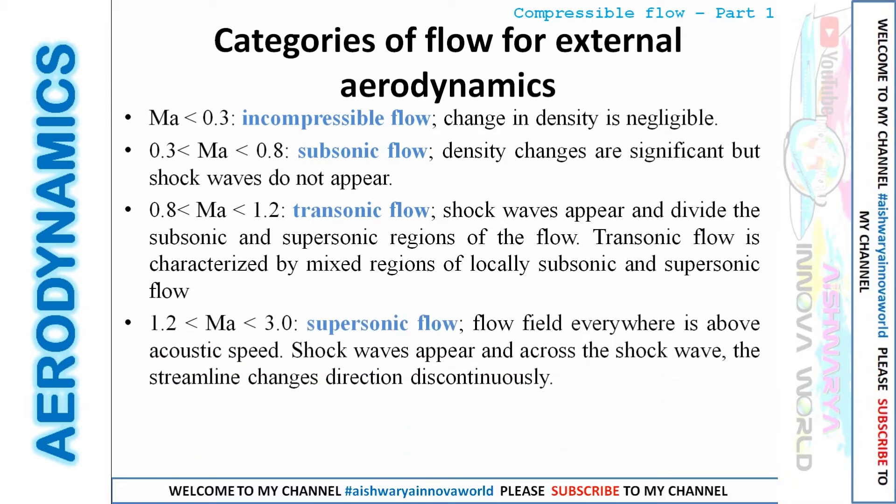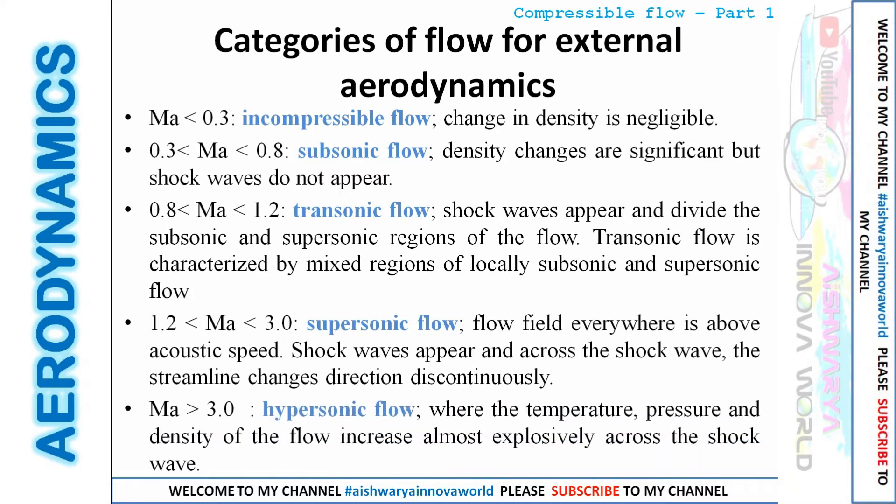Then comes the Mach number range from 1.2 to 3, which we call supersonic flow, where shock waves mostly appear in the system and it is obviously a compressible flow. The last category is hypersonic flow, where the Mach number is greater than 3 or beyond 5, where temperature, pressure, and density almost increase randomly across the shock wave.